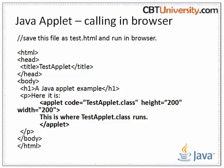As discussed, the applet tag is deprecated and the object tag should be used. The applet tag has three attributes: code, width, and height. The code attribute specifies the applet class to be called, and width and height set the pixel dimensions. Applets may also be embedded using the object or embed element. The host application — typically a web browser — instantiates the applet class and creates an applet context for the applet.